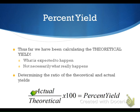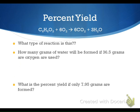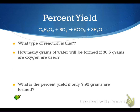Our equation for percent yield is: actual over theoretical times 100 gives us a percent. Actual is what you yield from the lab; theoretical is what your T-chart shows you. Anything that comes from your T-chart is your theoretical yield — that's how you can remember it. We want to find how many grams of water will be formed starting with 36.5 grams of oxygen, and then we'll calculate percent yield after. We still have to do a T-chart to find our theoretical yield first.